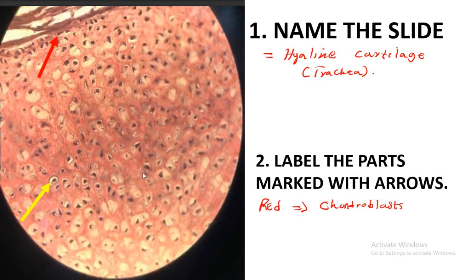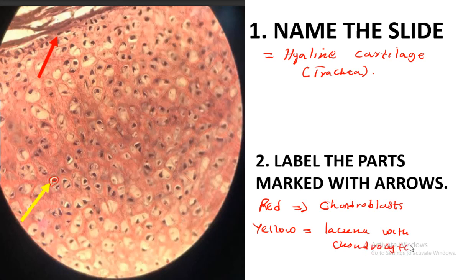Chondroblasts are responsible for the production of the extracellular matrix in the cartilage. When you look at the yellow arrow, it is indicating the outer side — this is the lacuna with chondrocytes. Remember: chondrocytes are found in the lacuna, whereas chondroblasts are not. The chondroblasts form the cellular component of the perichondrium, alongside the fibrous component.